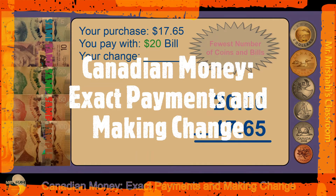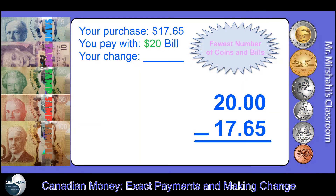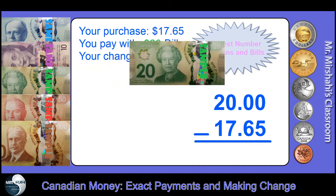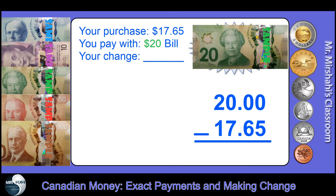Hi, today we're going to talk about exact payments and making change. Let's say you did some shopping and your purchase amount is $17.65 and you paid for your purchase with a $20 bill. Since you paid more than the purchase amount, obviously you should get some money back — that is called making change.